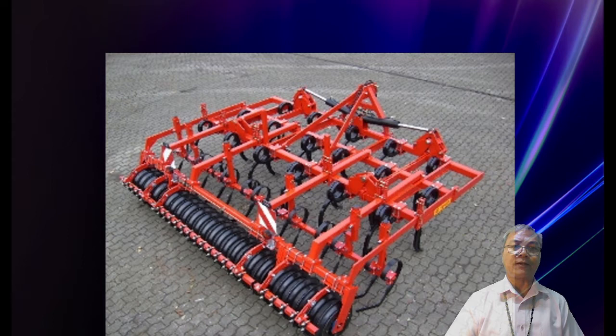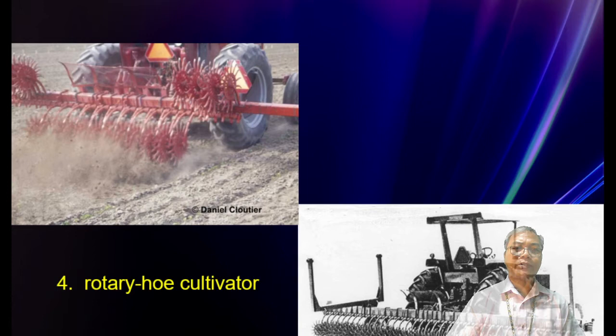Number four is the rotary hook cultivator, which rotates as seen in the picture.